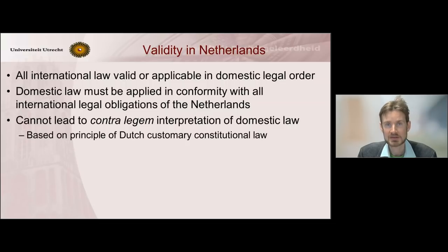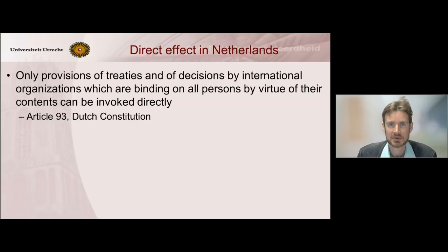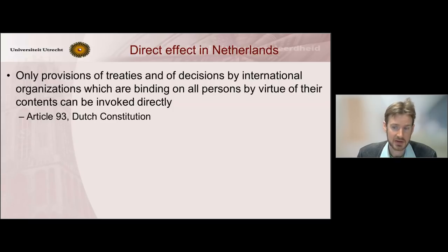All this is based on unwritten constitutional law of the Netherlands. Now let's look at direct effect or invocability of international law before the Dutch courts. Here we have to look to Article 93 of the Dutch Constitution, which states that only provisions of treaties and decisions by international organizations which are binding on all persons by virtue of their contents can be invoked directly before the Dutch courts.